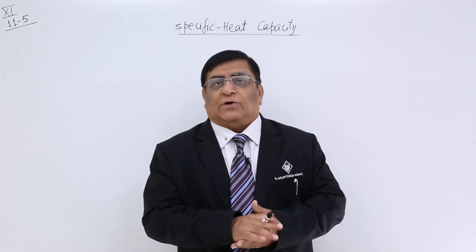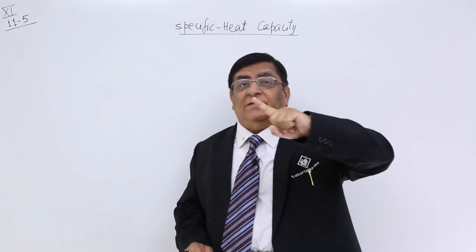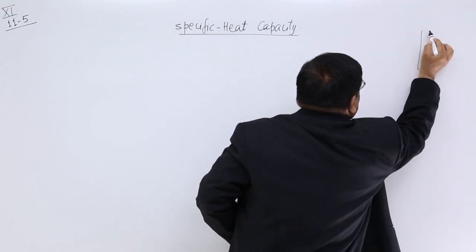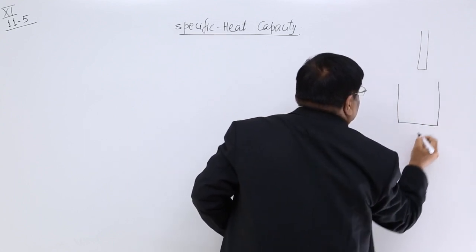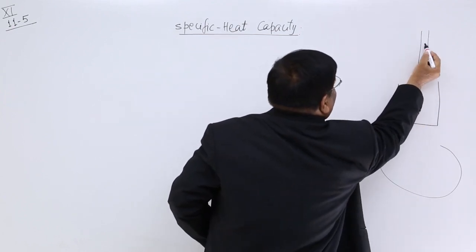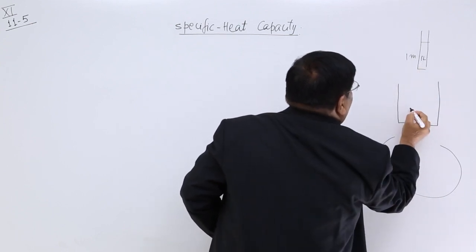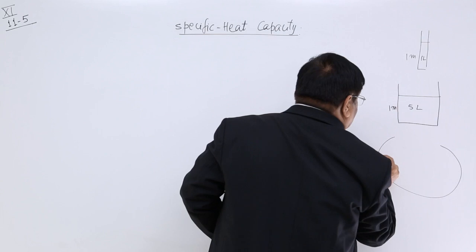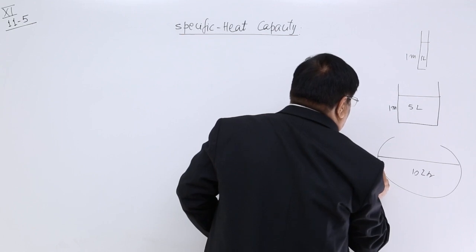I have got many containers of water and I want to fill up water by 1 meter height. In this one container, I fill 1 liter and it goes to 1 meter height. Here I fill 5 liters, then only it goes to 1 meter height. And here I have to fill 10 liters, then only it goes to a height of 1 meter.